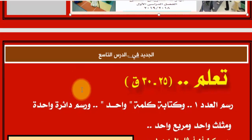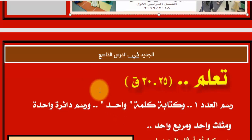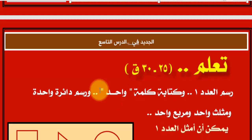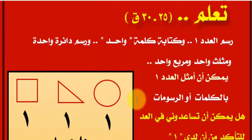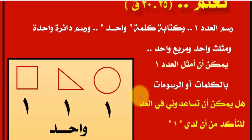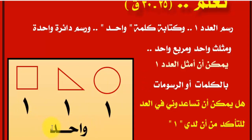درسنا التاسع النهاردة هيدخل في جزئية جديدة في التعلم، وهي رسم العدد واحد — رسمه من فوق لتحت — وكتابة كلمة واحد باللغة العربية، ورسم دائرة واحدة أو مثلث واحد ومربع واحد. المعلم أو المعلمة بترسم الثلاث أشكال على اللوحة وتكتب تحت كل واحد منهم كلمة واحد، عشان يفهم الأولاد إن العدد واحد يتمثل بالكلمات والرسومات.